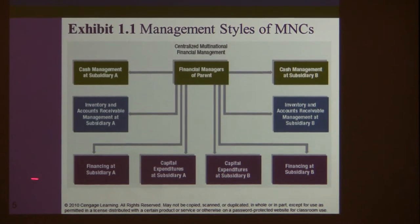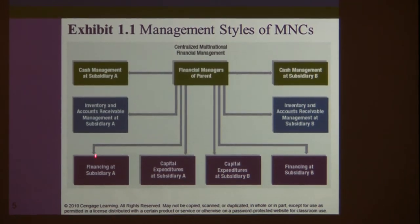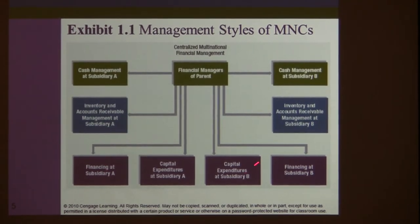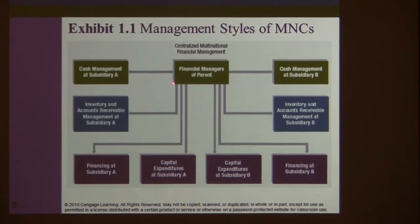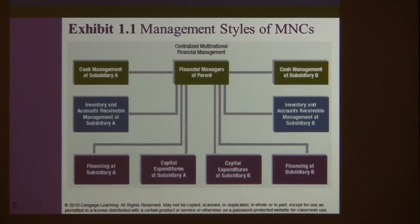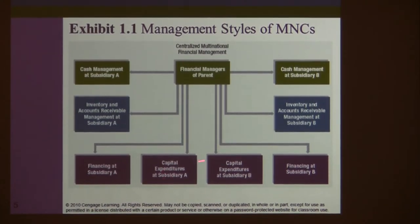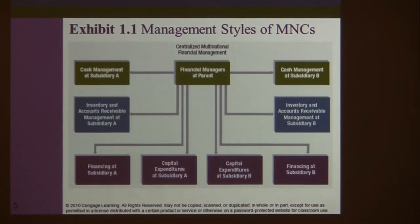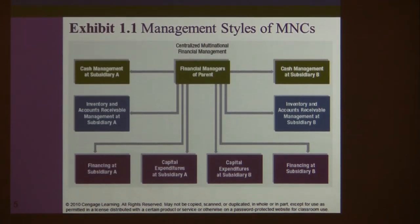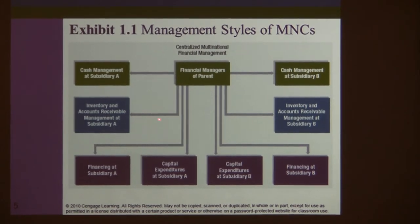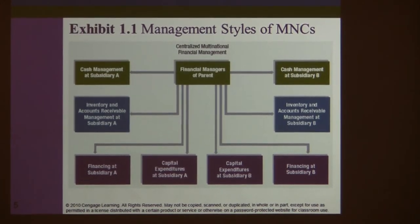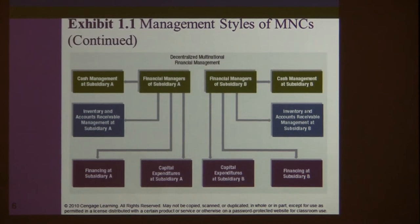In a centralized structure, the financing decision — how subsidiaries raise money — is also centralized and must go through the parent company. The investment decision, which is capital expenditure, must also be approved by the parent company for both subsidiaries A and B. All key decisions are made or ultimately approved by the parent company — that is a very centralized management style.